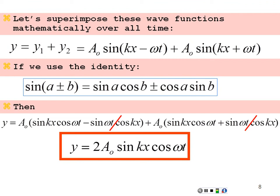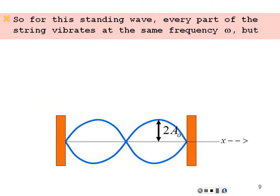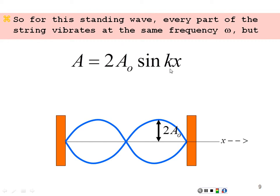We have an amplitude of a standing wave that depends on our value of x on the string, and the whole string continues to vibrate with angular frequency ω equal to the angular frequency of the interfering waves. This is our standing wave equation. The amplitude is equal to 2A₀ sin(kx). At certain points we have a maximum amplitude equal to twice the amplitude of the interfering waves, and at other points we have zero whenever sin(kx) equals zero.